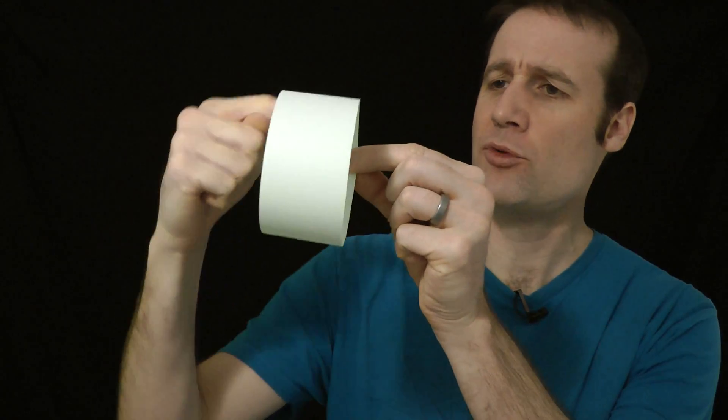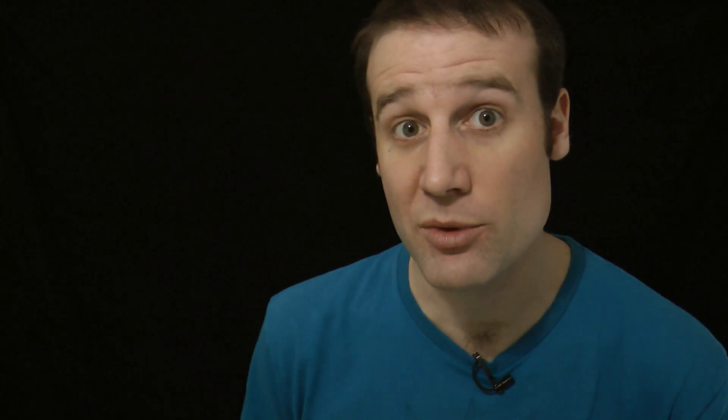We are going to move on to sticking more than one loop together before we cut them in half, and that changes everything. Here I have a standard issue zero twist cylinder, and these are incredibly boring, because if you cut them right down the center you get exactly what you expect, two zero twist cylinders, but if we stick them together it changes completely.